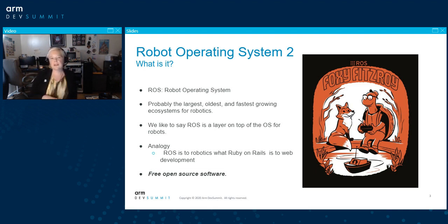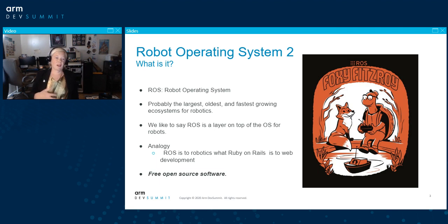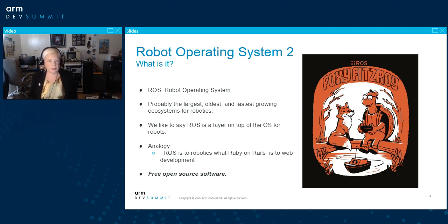The discrepancy that comes up is people say, well, it's not an operating system. And it really isn't — ROS is basically a layer that fits on top of an operating system, usually Ubuntu, to enable you to do the things you want to do. The analogy I like to make is that ROS is to robotics what Ruby on Rails or something similar is to web development. And it's all free and open source, so it's completely accessible.